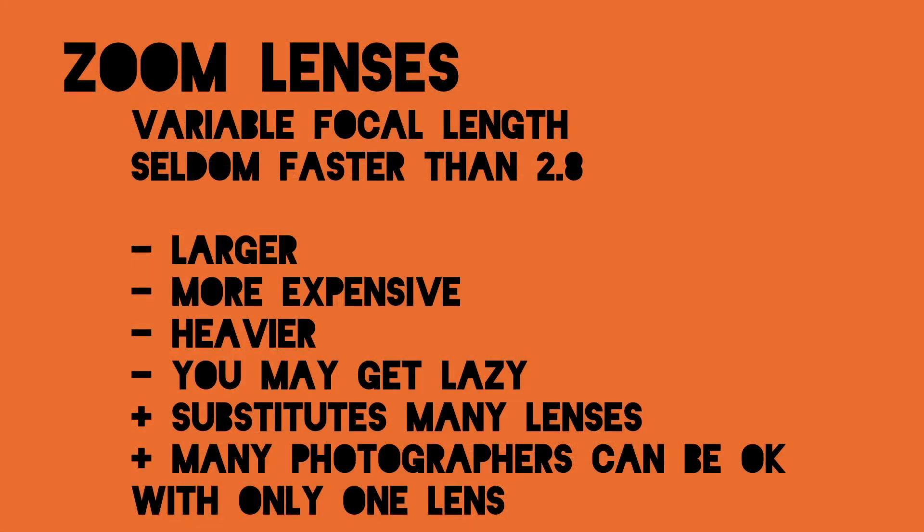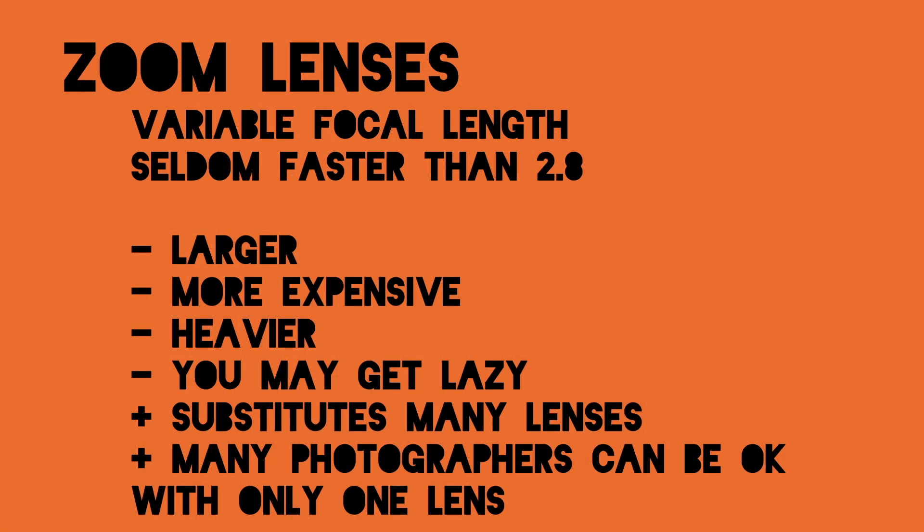Then we have zoom lenses, characterized by a variable focal length. They are seldom faster than f/2.8, and they are larger, more expensive, and heavier. It takes much more glass to make a zoom lens. They can also make you a little bit lazy — you may forget to use your feet when shooting, and instead just zoom in or zoom out. But they are practical; they substitute many other lenses, and many photographers can get by with just one lens.